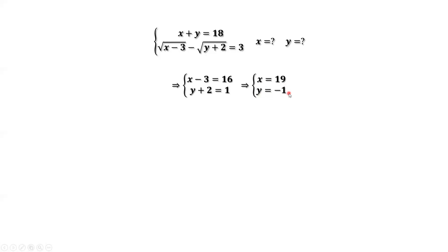Because we squared both sides, we have to check if this is a real solution. By checking, we replace x by 19 and y by negative 1 back into this system. It is true.